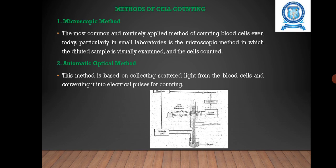Next is the automatic optical method. This method is based on collecting scattered light from the blood cells and converting it into electrical pulses for counting. The optical system provides a dark field illumination as shown on the screen.